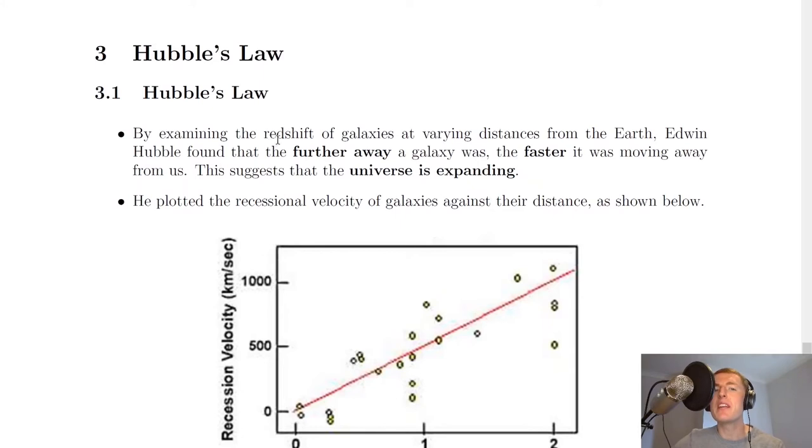Hey guys, how's it going? In this video we're going to look at Hubble's Law. So let's get started. It says here that by examining the redshift of galaxies at varying distances from the earth, Edwin Hubble found that the further away a galaxy was, the faster it was moving away from us. This suggests that the universe is expanding, so this is some more evidence that the universe is expanding.